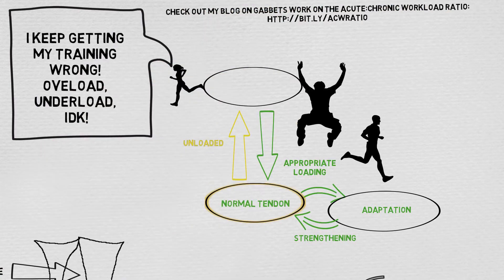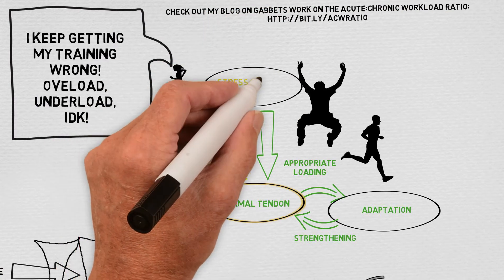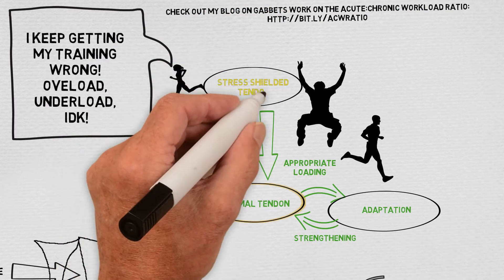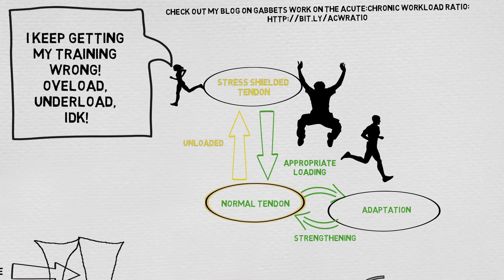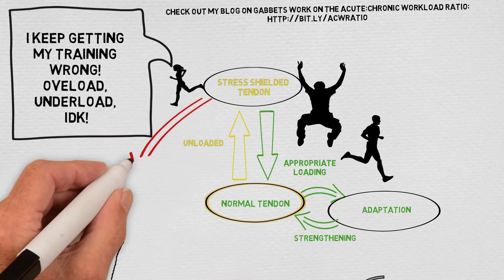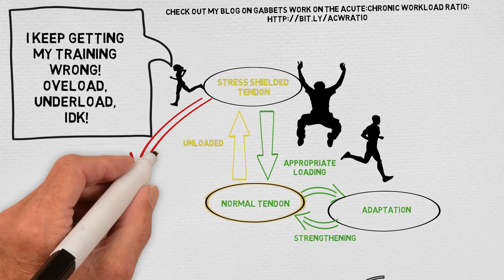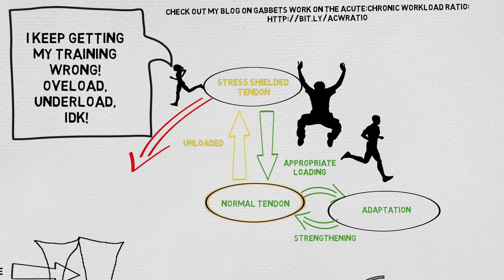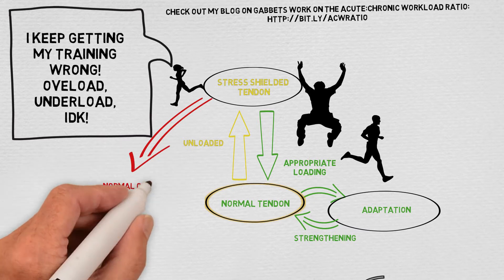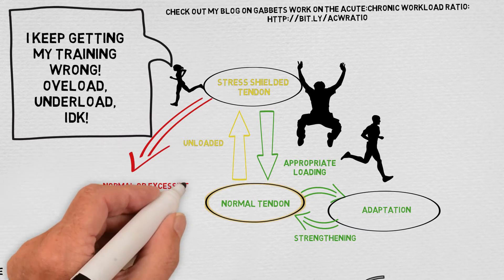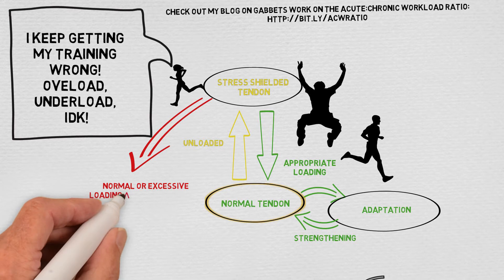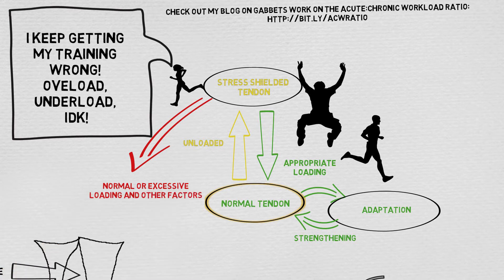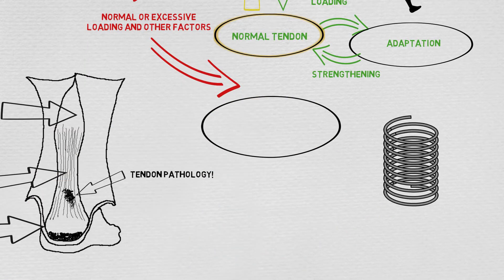In these cases, the unloaded tendon becomes stress-shielded, whereby the superficial portion of the tendon bears too much load and the deep portion too little. The stress-shielded tendon, under either normal or excessive loads, plus or minus other factors such as bone spurs, diabetes, or statin use, can become reactive.